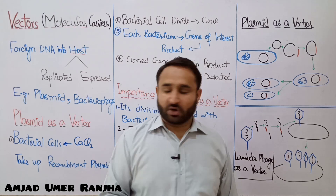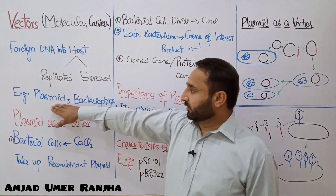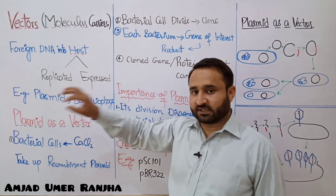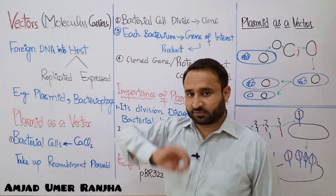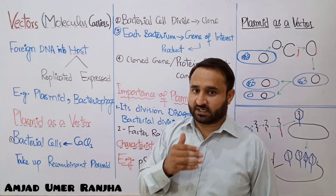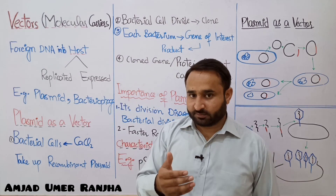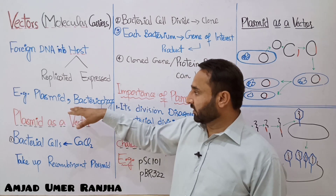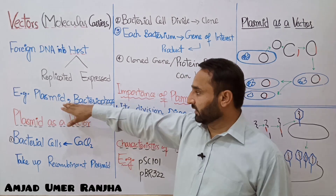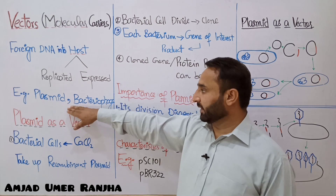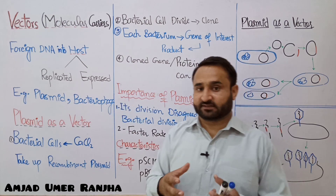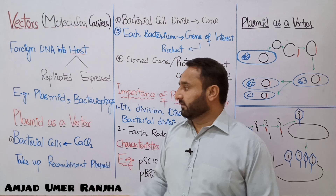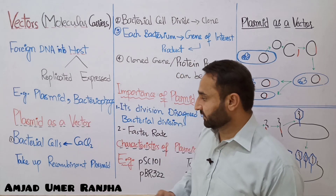The bacteria can also produce a protein product from the gene of interest. Two examples of vectors are: plasmid, which is the extra-chromosomal circular DNA of bacteria, and bacteriophage — the phage viruses which infect bacteria. First of all, we will discuss plasmid as a vector.